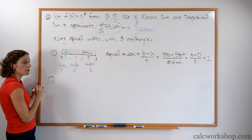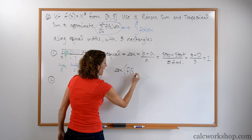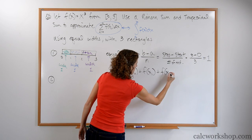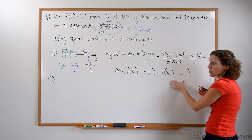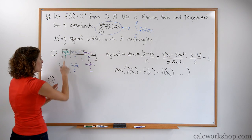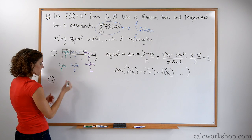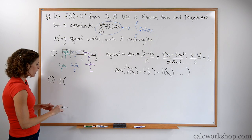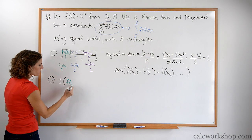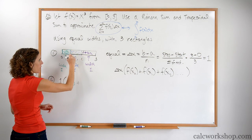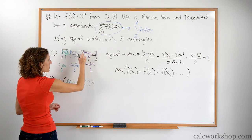Let's do the left approximation. We can factor out delta x, the width, and just add up all of the height values. For the left heights, we want the height on the left of the green rectangle: f of 0. For the blue rectangle, the height on the left is f of 1. For the purple rectangle, the height on the left is f of 2.